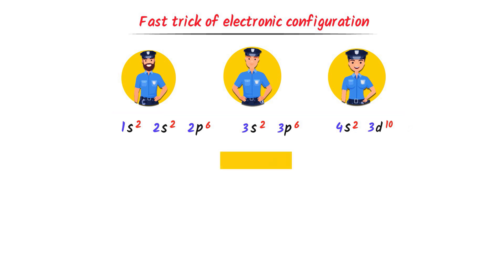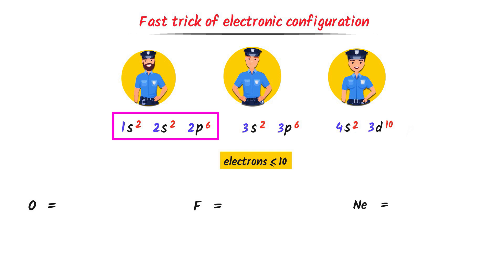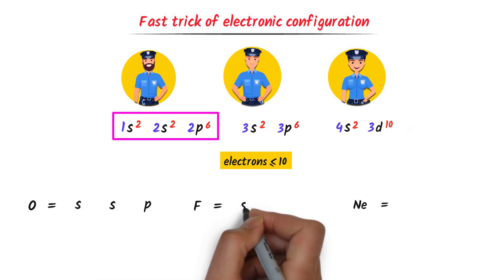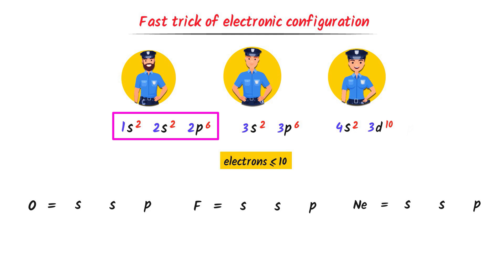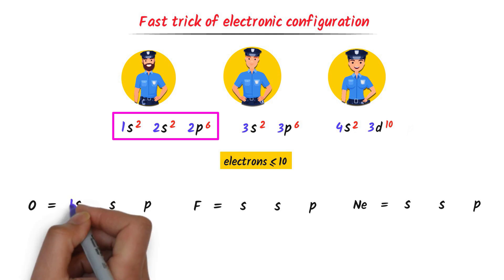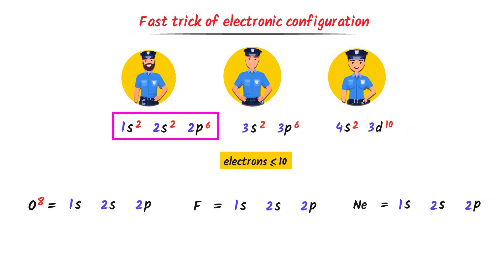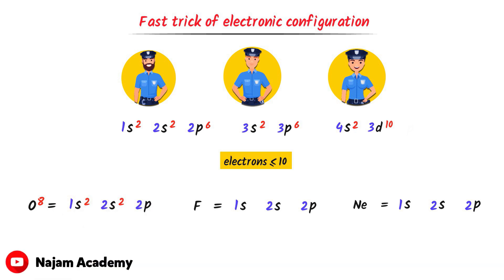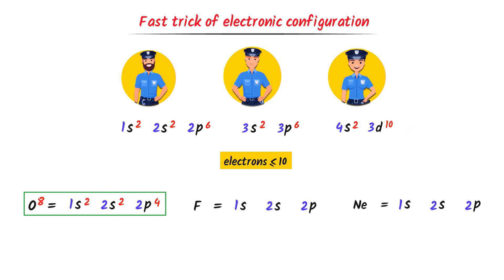If electrons are less than or equal to 10, I will write SSP type. For example, consider oxygen, fluorine, and neon — I call these SSP type elements, meaning I write 1s, 2s, 2p in front of them. Oxygen has 8 electrons: I place 2 electrons in 1s, 2 in 2s, and 4 in 2p — 2+2+4 equals 8 electrons. I have configured the 8 electrons of oxygen.